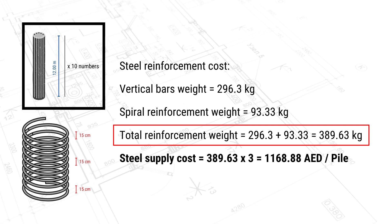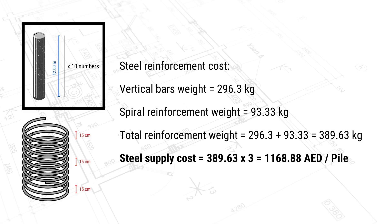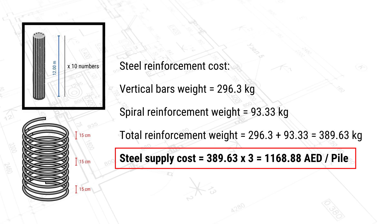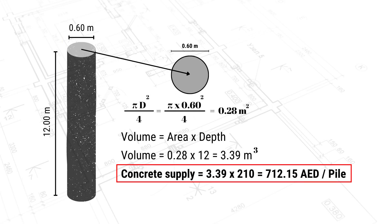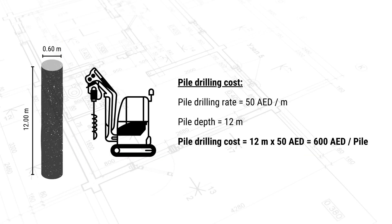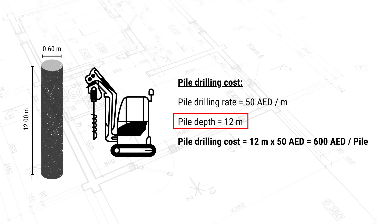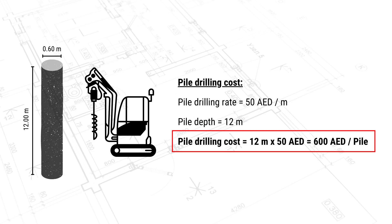If the steel supply rate is 3,000 dirhams per ton, that is 3 dirhams per kilogram. So the steel supply cost = 389.63 × 3 = 1,168.88 dirhams per pile. For the pile drilling cost, using a subcontractor quotation of 50 dirhams per linear meter and a pile depth of 12 m: drilling cost = 12 × 50 = 600 dirhams per pile.